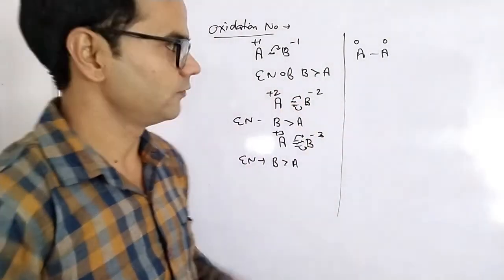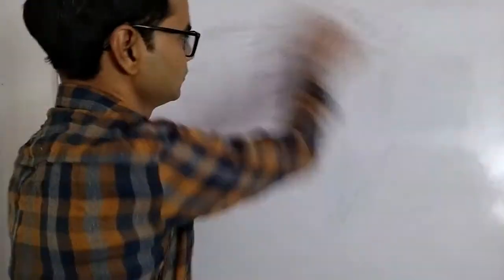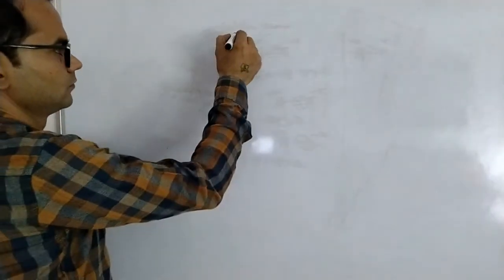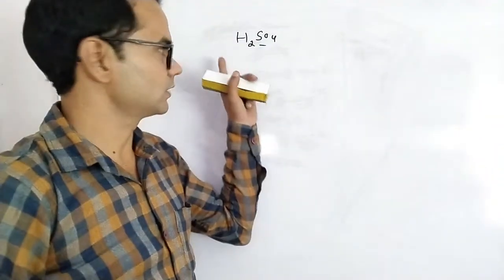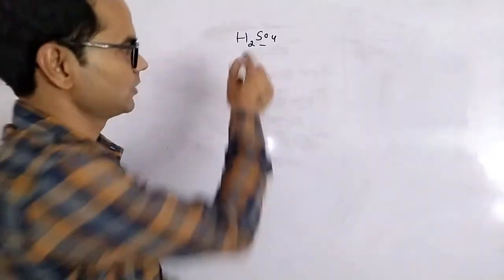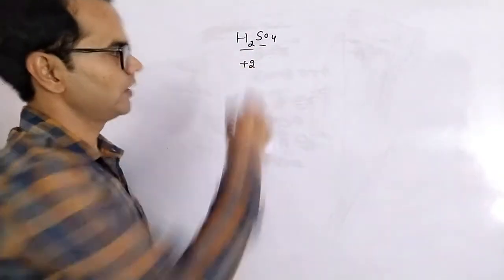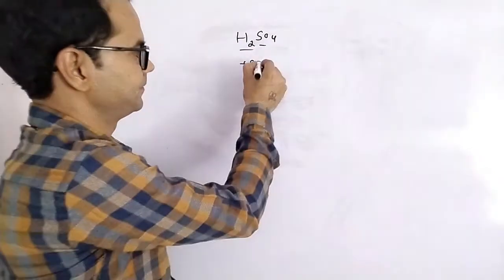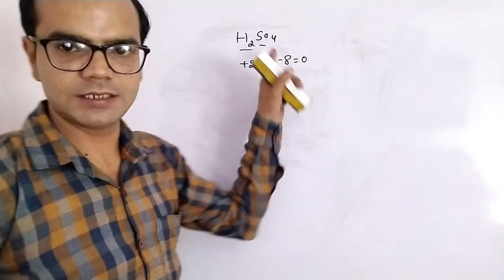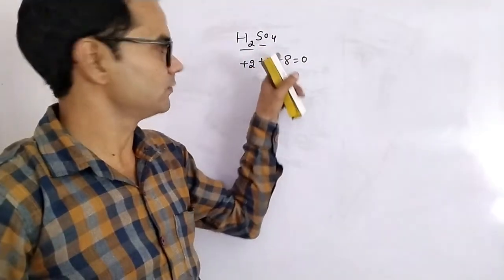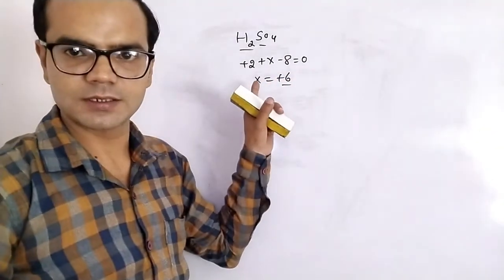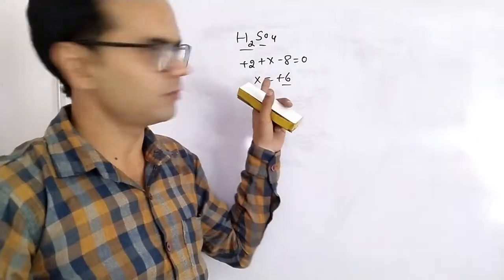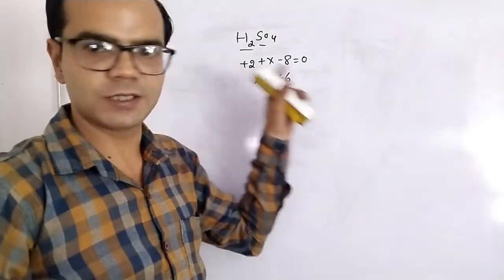For example, we have to find out the oxidation state of sulfur in H₂SO₄. The charge on hydrogen is plus two because there are two hydrogen atoms. The charge on oxygen is minus two and we have four atoms, so total charge is minus eight. Solving for x, the oxidation state of sulfur equals plus six. But in some compounds this x-method fails, and then we have to understand the structure as well.